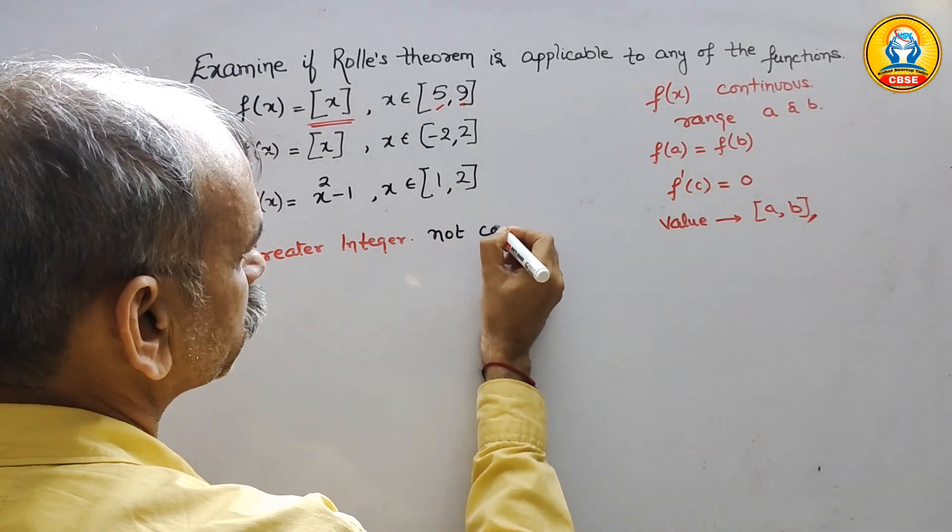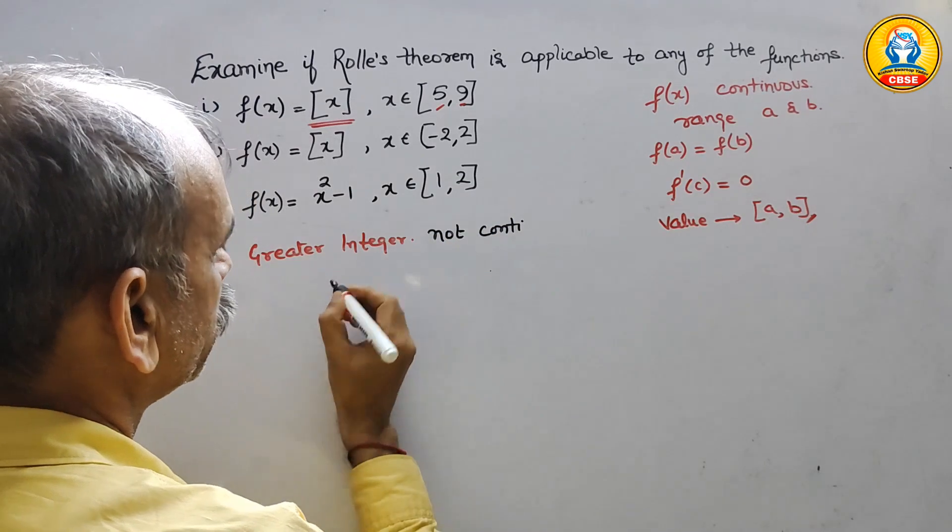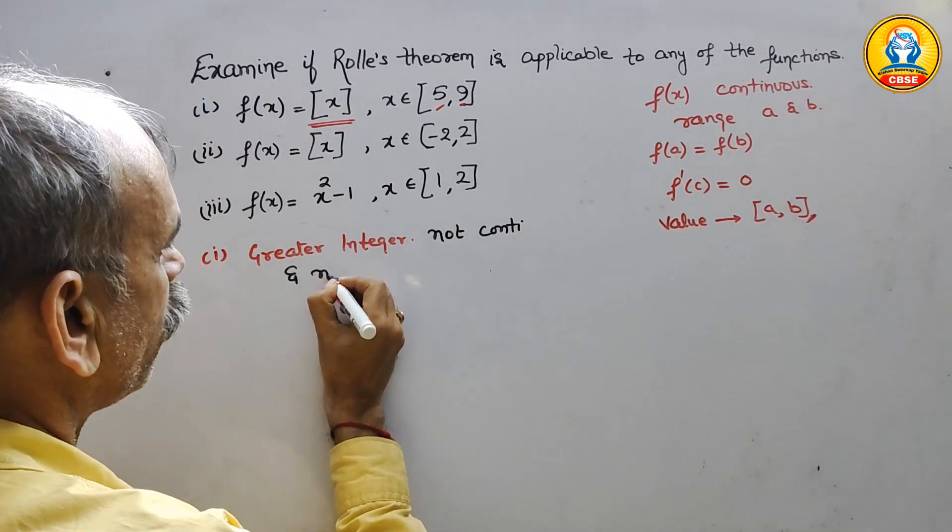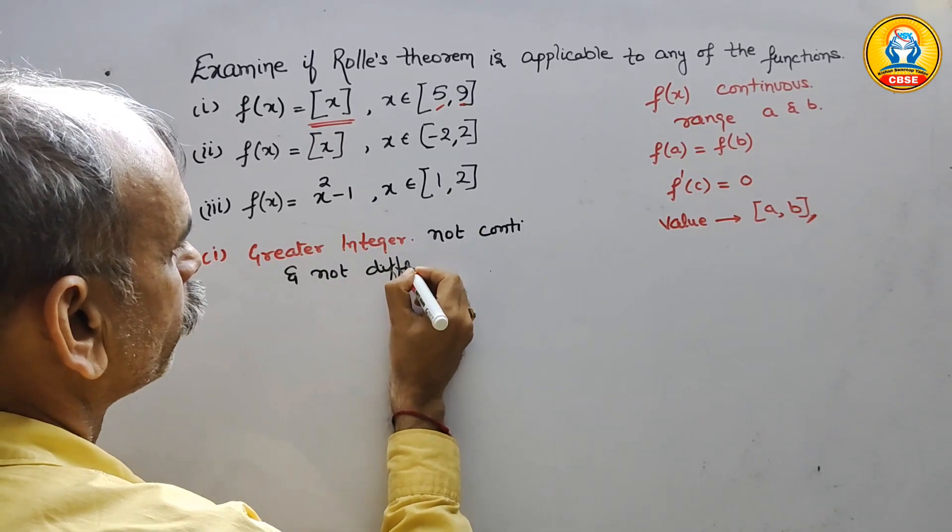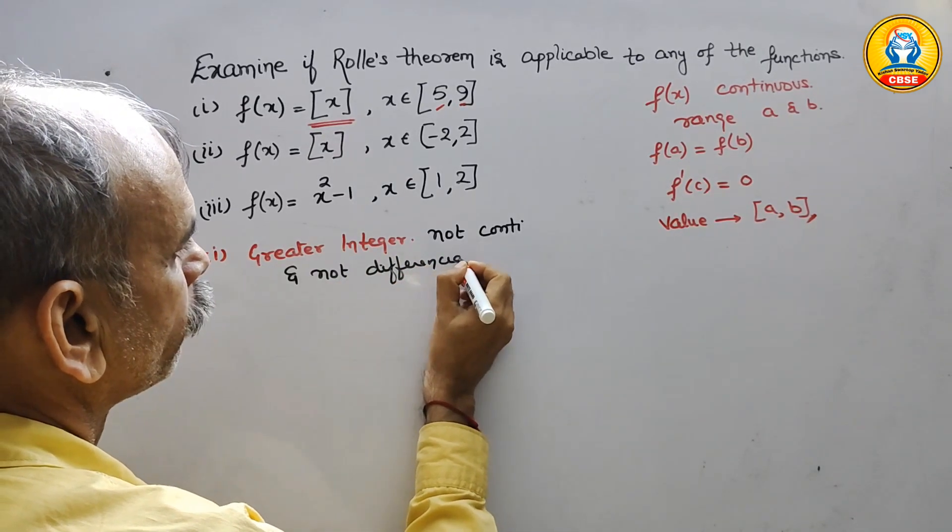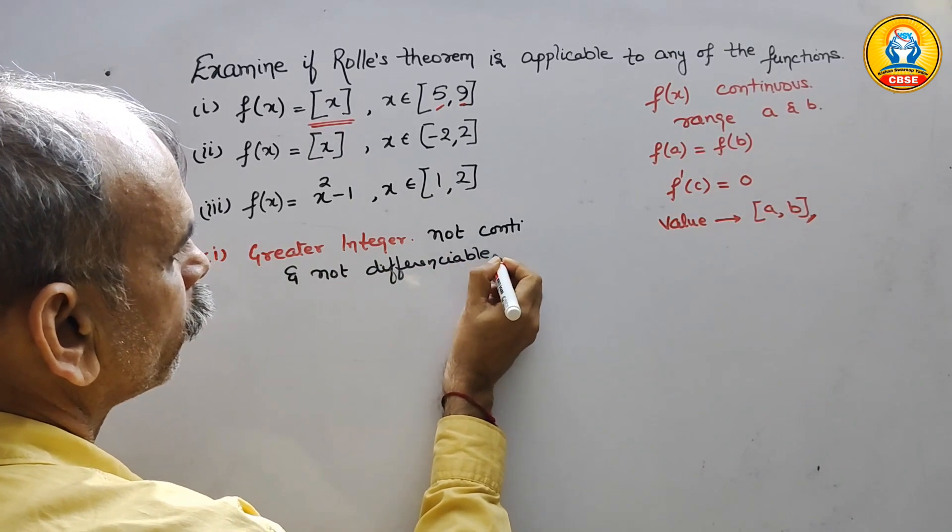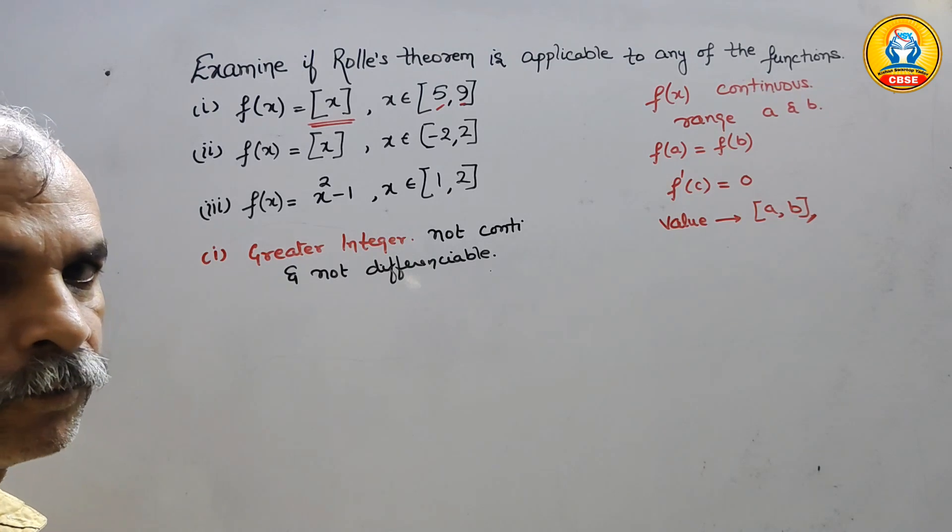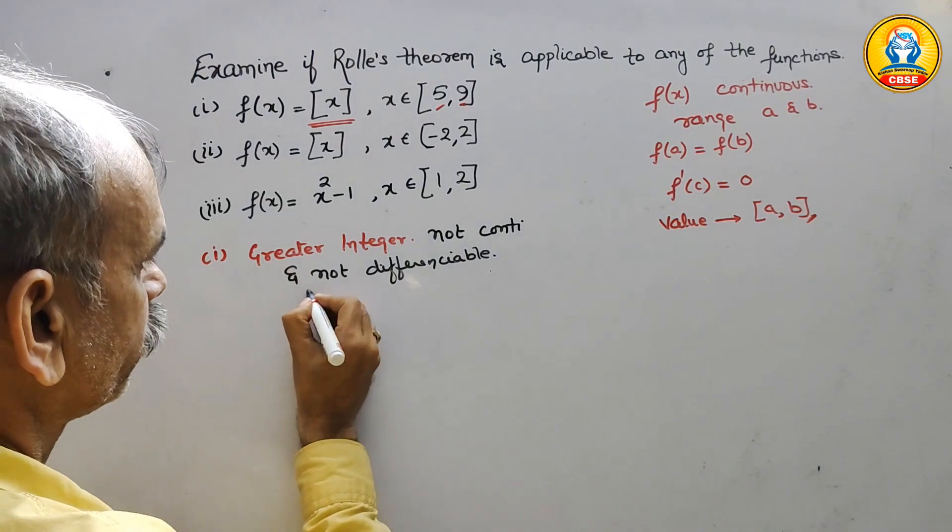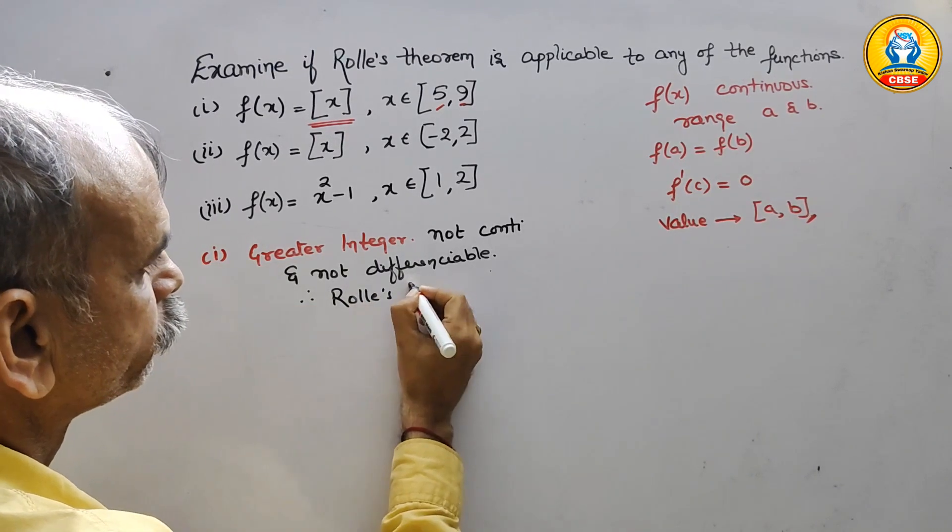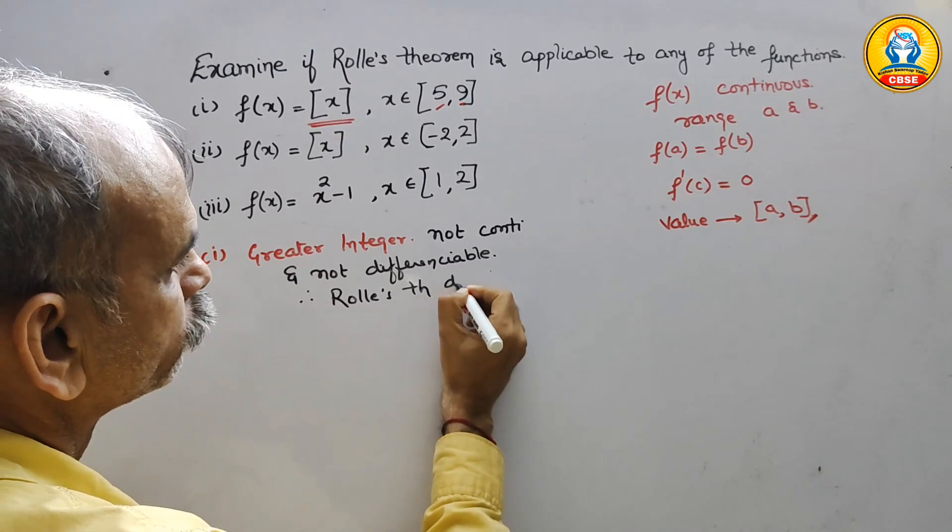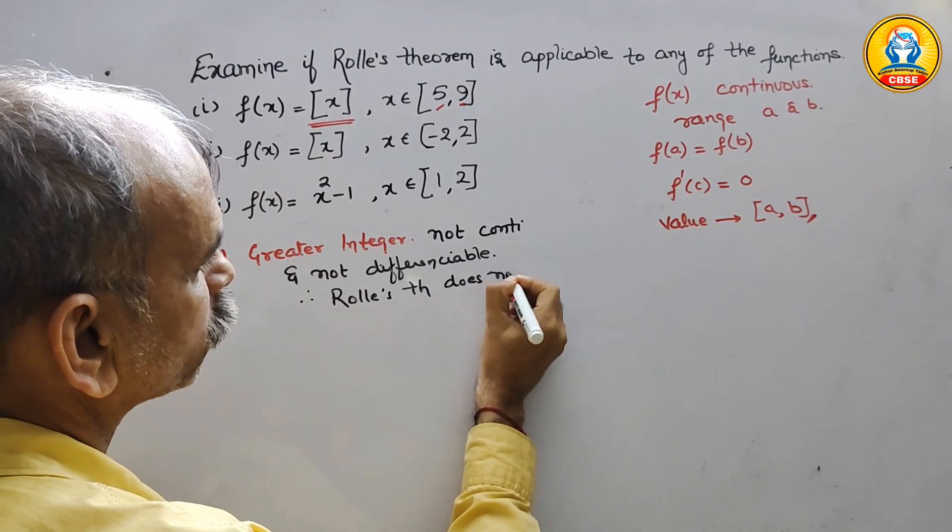Not continuous and not differentiable. Therefore, Rolle's theorem does not possible.